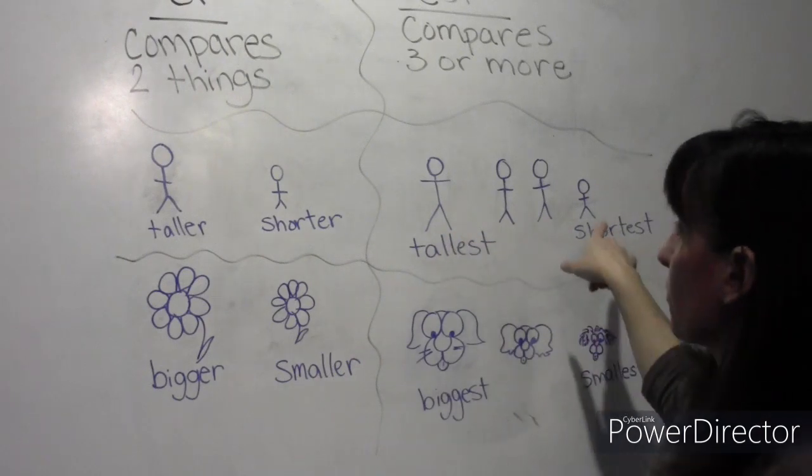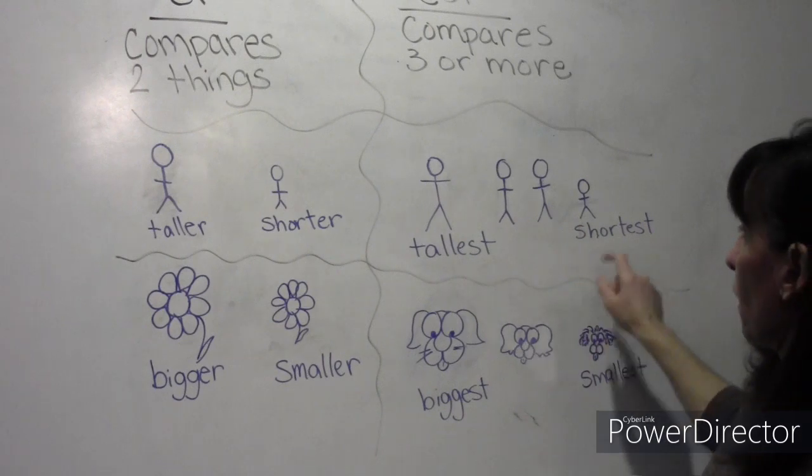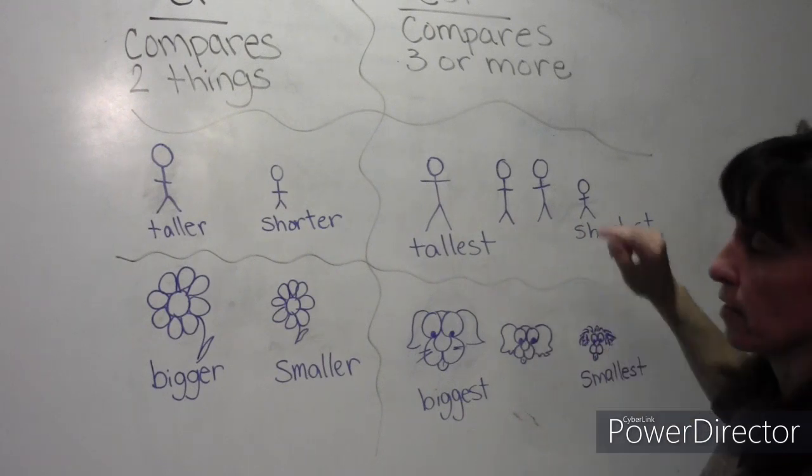There are four of us in the Patrika family. Brandon is the tallest. Mr. Patrika and Justin are in the middle, and I am the shortest in our house.